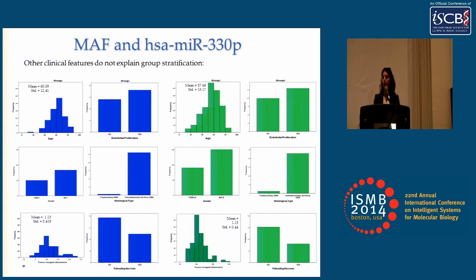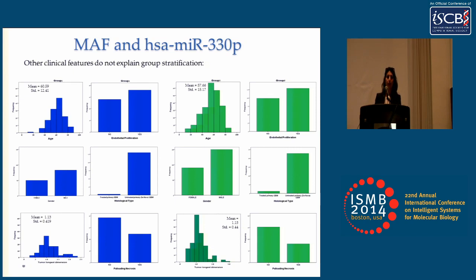Molecular markers can be the cause of subclinical states, so to avoid such bias, we confirmed that the stratification we observed is based on our method and not on any clinical feature. We examined the distribution of six clinical features available for GBM patients. Group 1 (blue) and group 2 (green) showed practically identical distributions, confirming that our results are not a consequence of any underlying clinical state.